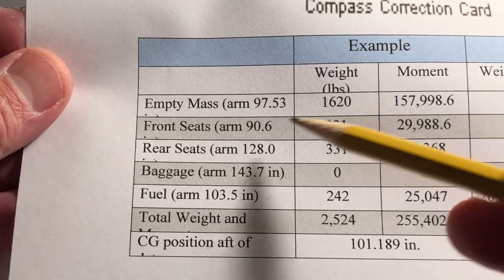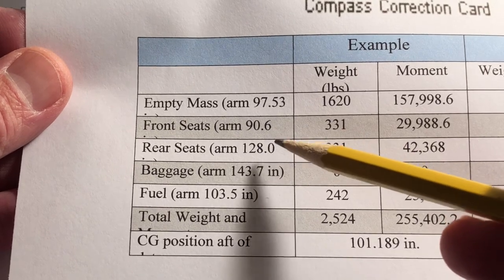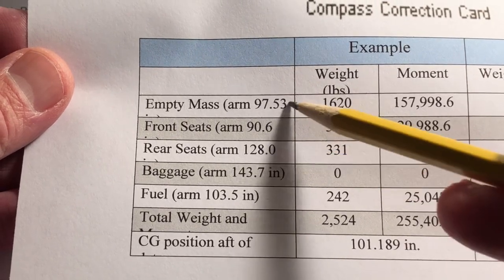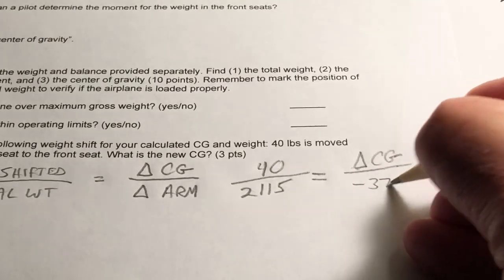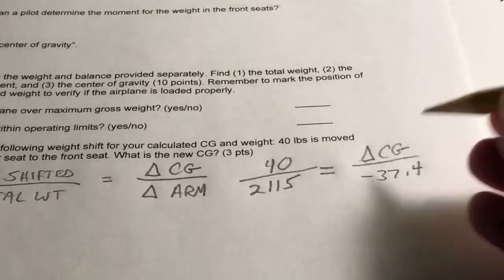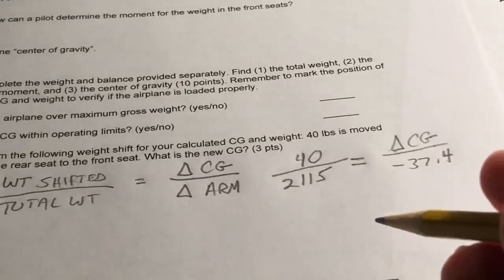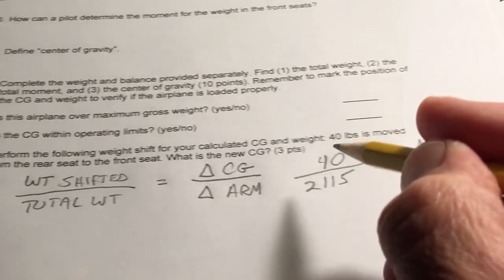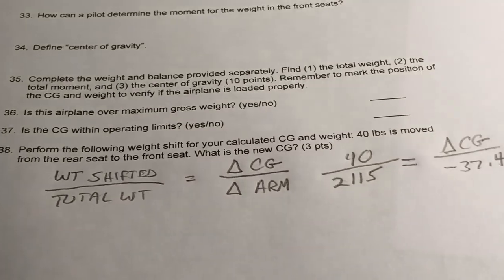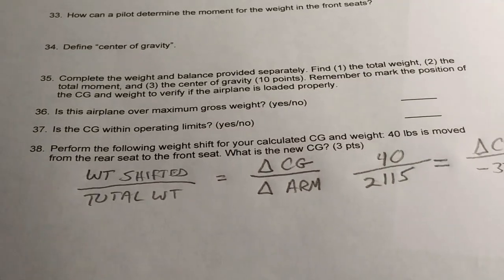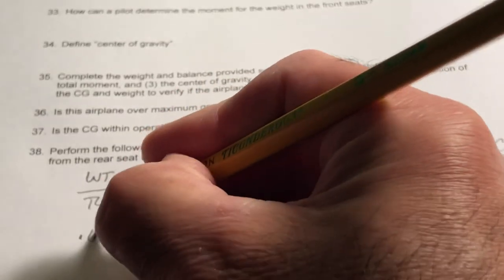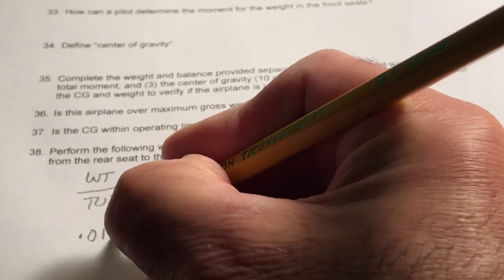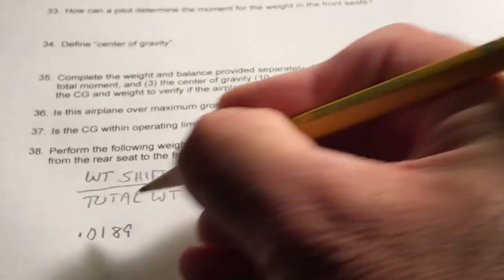So we'll use a negative 37.4, because we're subtracting from our arm. So the change in CG will be minus 37.4. Okay, let's divide 40 by 2,115. 40 divided by 2,115 equals 0.0189125.